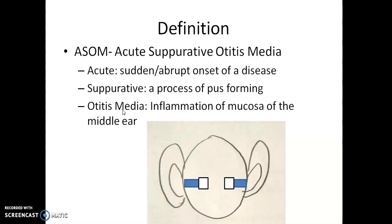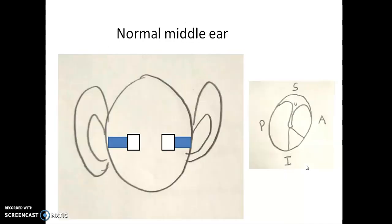Otitis media — 'media' refers to the middle. In our ear we have three parts: the external ear, the middle ear, and the internal ear. So the middle ear is called media. Otitis media is the inflammation of the middle ear. There is an inflammation in the middle ear which is of sudden onset and ultimately results in pus formation — this is what we call ASOM, acute suppurative otitis media.